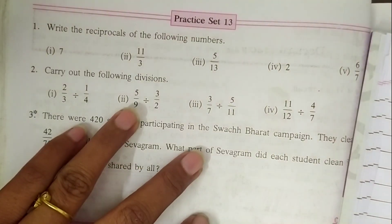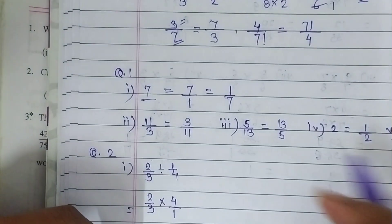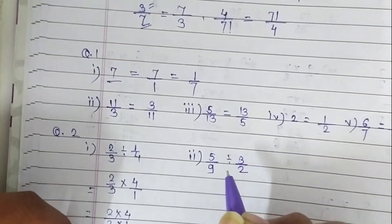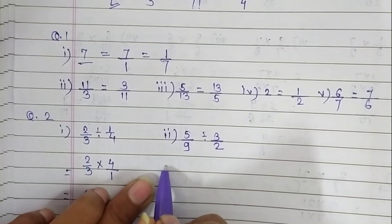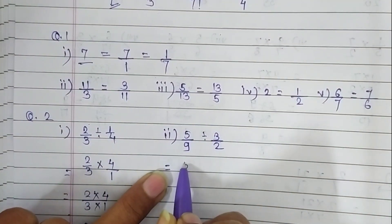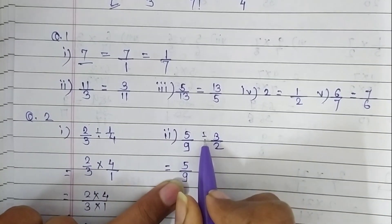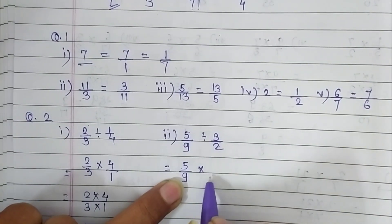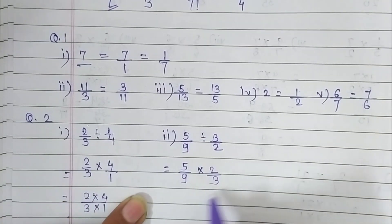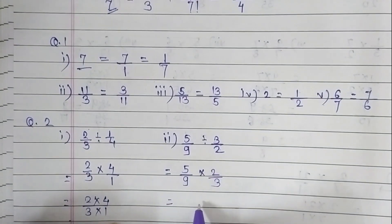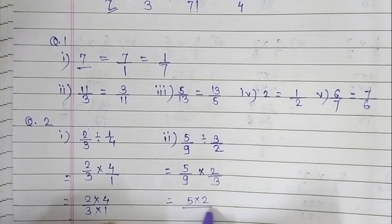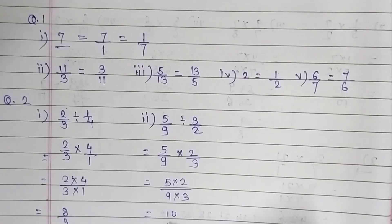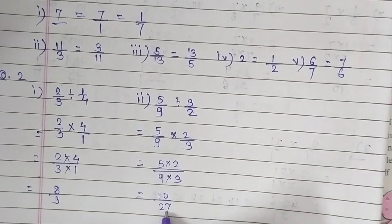The second question is 5 upon 9 divided by 3 upon 2. Write the first fraction as it is: 5 upon 9. Remove the division sign and write a multiplication sign. The reciprocal of the next fraction is 2 upon 3. Now multiply: 5 multiplied by 2 divided by 9 multiplied by 3. 5 times 2 is 10, and 9 times 3 is 27. So our answer is 10 upon 27.